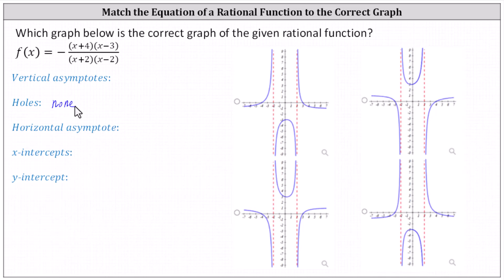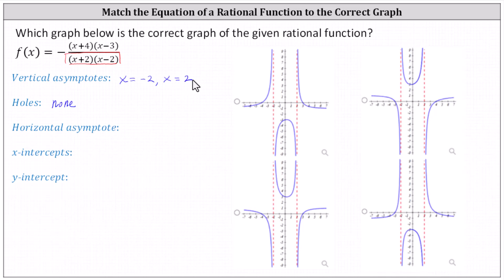The vertical asymptotes are the zeros of the denominator that are not zeros of the numerator. In this case we have two vertical asymptotes. X plus two equals zero when x equals negative two, so x equals negative two is one vertical asymptote. X minus two equals zero when x equals positive two, so x equals positive two is the second vertical asymptote.